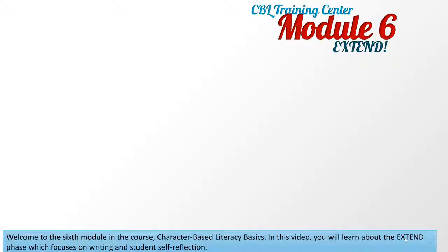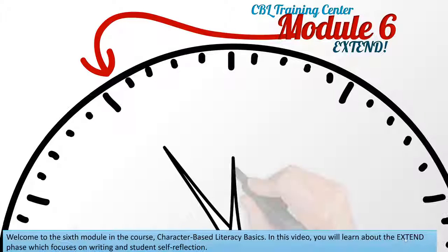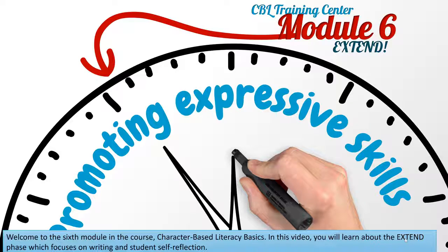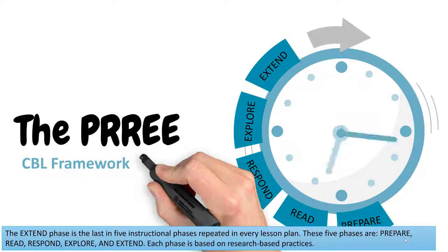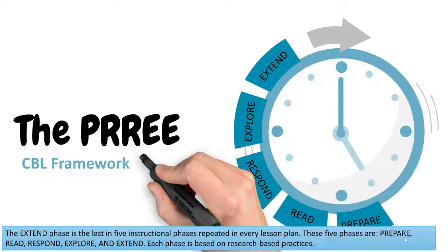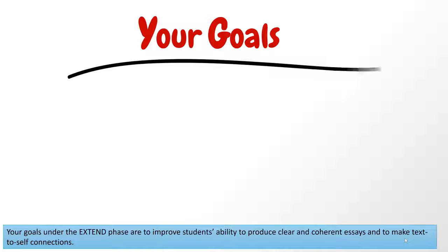Welcome to the sixth module in the course Character Based Literacy Basics. In this video you will learn about the extend phase, which focuses on writing and student self-reflection. The extend phase is the last of five instructional phases repeated in every lesson plan. These five phases are: prepare, read, respond, explore, and extend. Each phase is based on research-based practices.